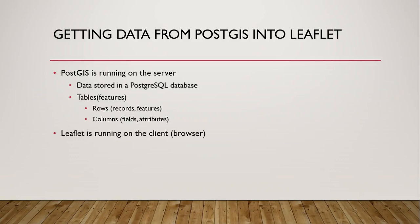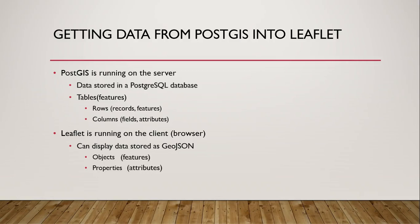We also have a Leaflet application running on the client — in the case of a web application, the client is the browser. Leaflet can display data stored in GeoJSON format, and that's how we're going to display data stored on the server. With GeoJSON we talk about objects, and each object has a number of properties, which are specific pieces of information about a specific object. Objects are analogous to features, similar to records or rows in the database, and properties are analogous to attributes, fields, or columns.